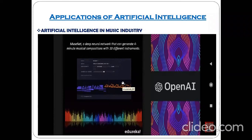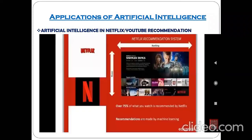The next example is artificial intelligence in Netflix and YouTube recommendations. Over 75% of what you watch is recommended by Netflix, and these recommendations are made by machine learning. If you haven't watched the second video I uploaded, please watch it — I have shown the YouTube recommendation system there.